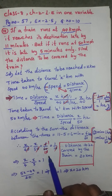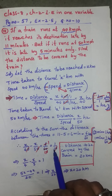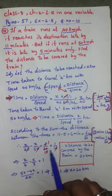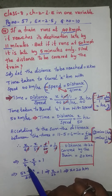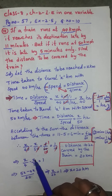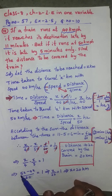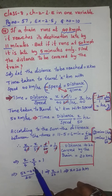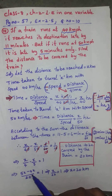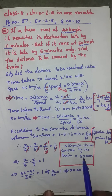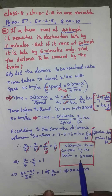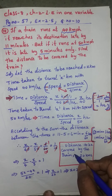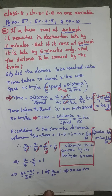Using the LCM of 40 and 50, we rewrite: 5x/200 − 4x/200 = 1/10. The LCM of 4 and 5 is 20, giving (5x − 4x)/20 = 1. So x/20 = 1, which implies x = 20 kilometers. Therefore, the distance to be covered by the train equals 20 kilometers.